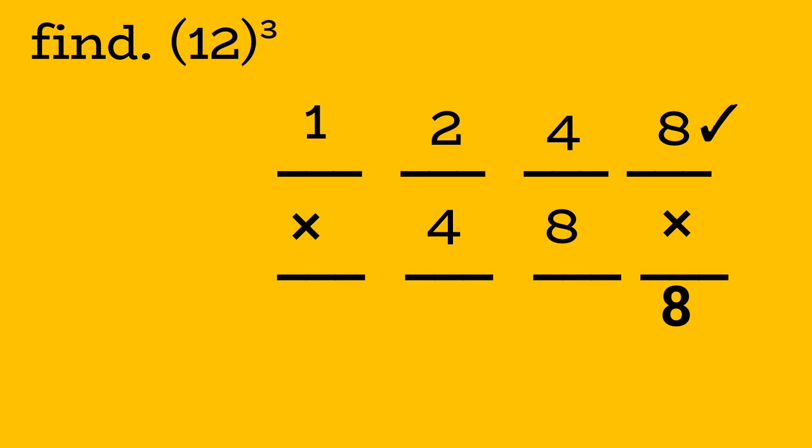Write 8. Adding 4 and 8 make 12. Write 2, carry 1. 2 and 4 make 6. Add carry 1, total is 7. Now write 7. Write last digit as 1. So final answer is 1728.